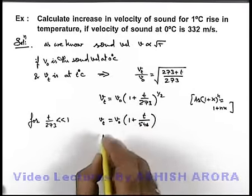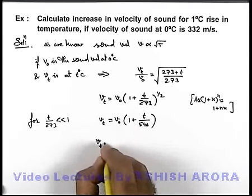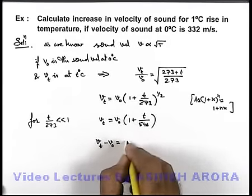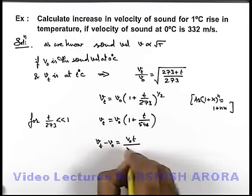And from here we'll get v t minus v not is equal to v not t by 546.